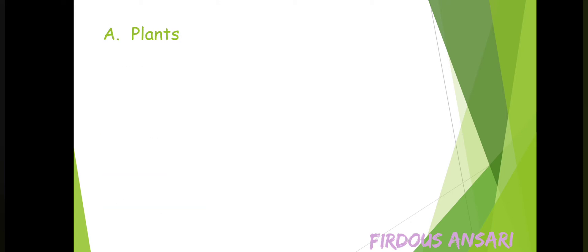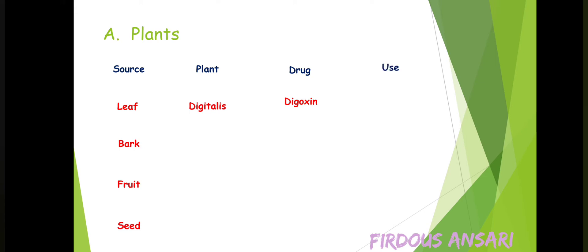Starting with plants, the sources are leaf, bark, fruit, and seed. For example, the plant digitalis — digitalis leaves are used from which the drug digoxin can be extracted, and this digoxin is used for the treatment of congestive heart failure. Similarly, from the plant cinchona, the bark is used from which the drug quinine is extracted, used for the treatment of malaria.